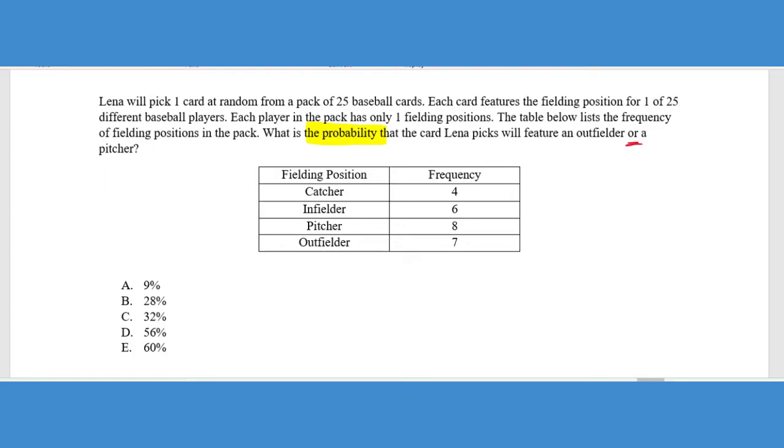Just like in the previous problem, we said that anytime you have the word 'and' in a probability question, we would be multiplying it. Well, anytime we have the word 'or' in a probability question, that means we're going to be adding their probabilities together. So we want to find the probability of getting an outfielder, then add that to the probability of picking a pitcher. We can see that the frequency of outfielders is 7 out of the 25 baseball cards. The pitcher is 8 out of the 25. We want to find the probability of picking one or the other, so that means addition, giving us a total of 15 over 25.